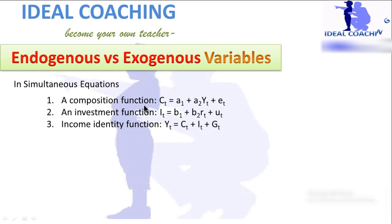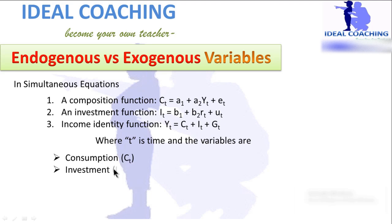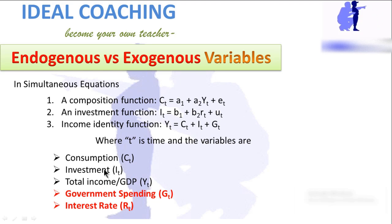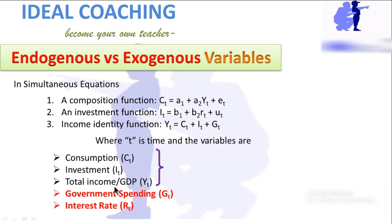In simultaneous equation models in economics, we have equations like a consumption function Ct, an investment function It, and an income identity function Yt, where t is time. The variables are Ct (consumption), It (investment), Yt (total income), government spending, and interest rates. Consumption, investment, and total income are all dependent on government spending and interest rates, but government spending and interest rates are not defined or evaluated in the model — so they are exogenous, and the three income-side variables are endogenous.